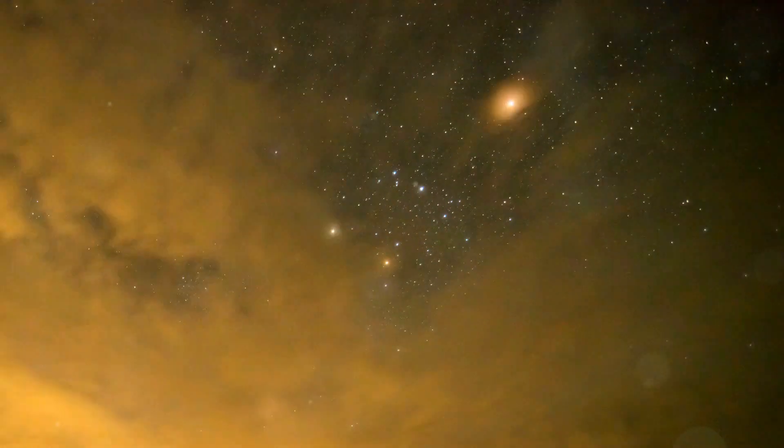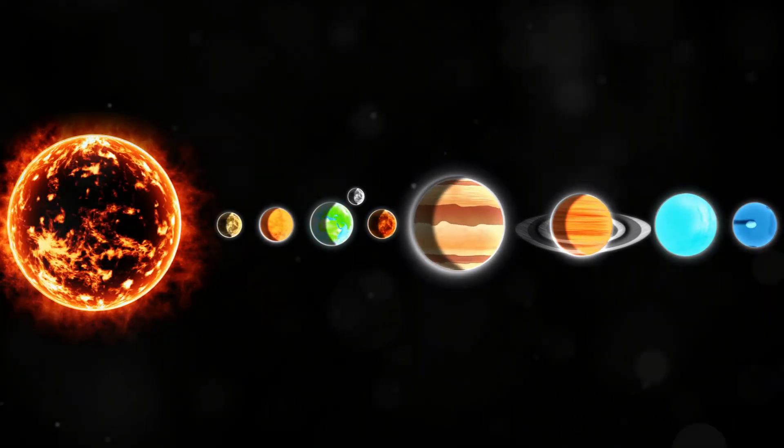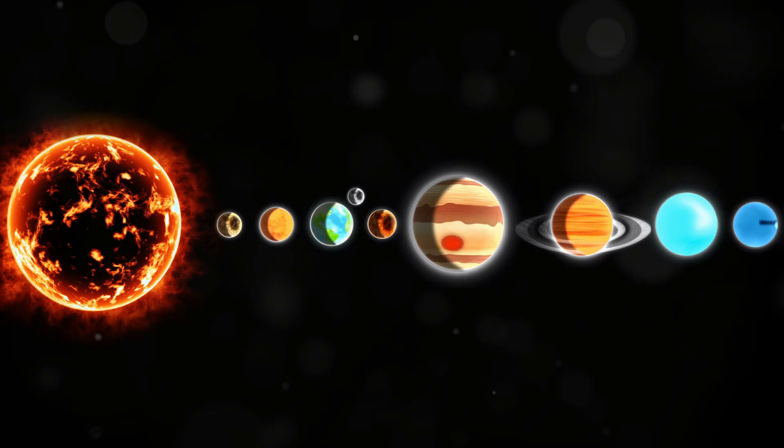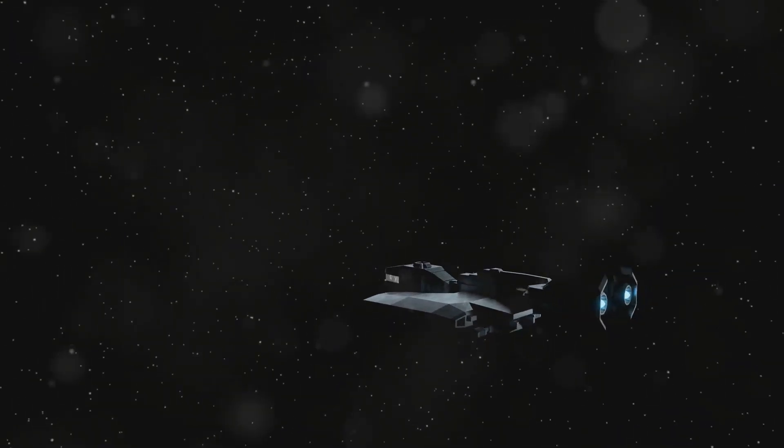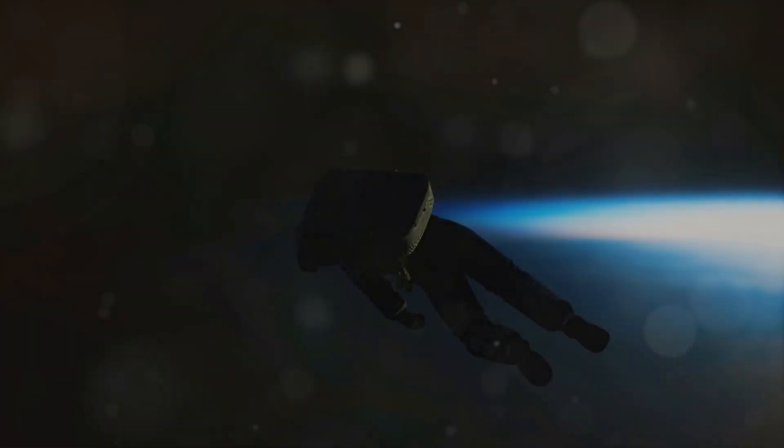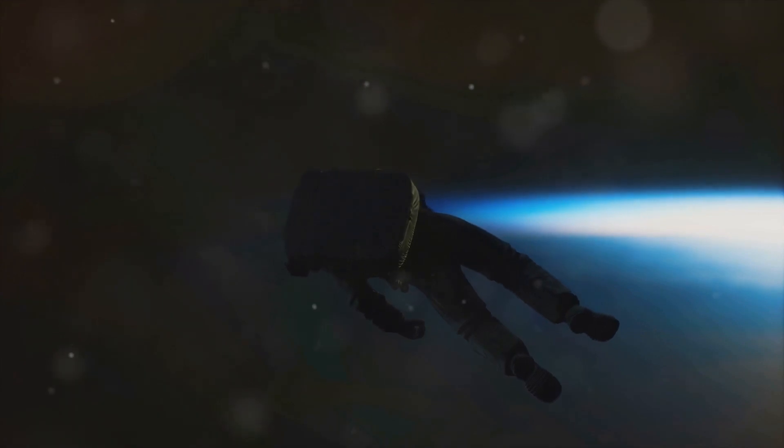Our galaxy, the Milky Way, is a vast and mysterious place. We once believed that planets only existed around stars, bound by gravity and orderly systems. Now we know that's not the whole story. Rogue planets, also known as interstellar planets, drift through space unbound to any star. They are cosmic nomads wandering the vast emptiness between stars.